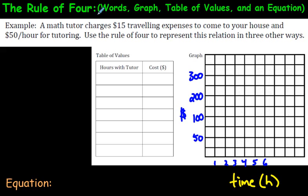The rule of four is when you can explain something mathematically in words, just like you see right here, we're going to read this example together. Then we're going to also show it as a graph, as a table of values, and lastly we'll also show it as an equation. So we're going to read this situation, which is the words part, and then we're going to use the rule of four to express this relation in three other ways.